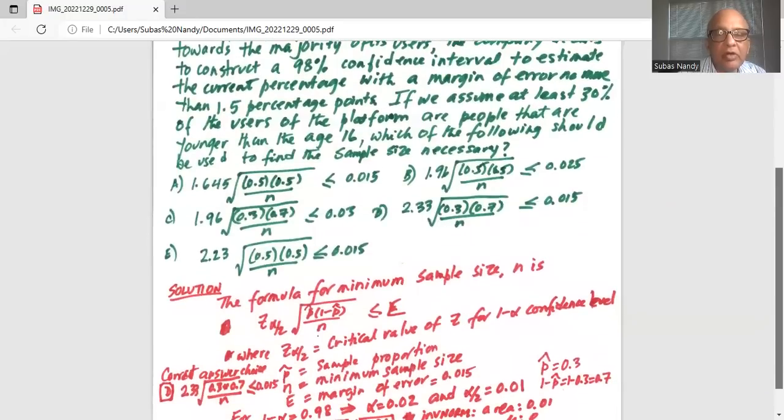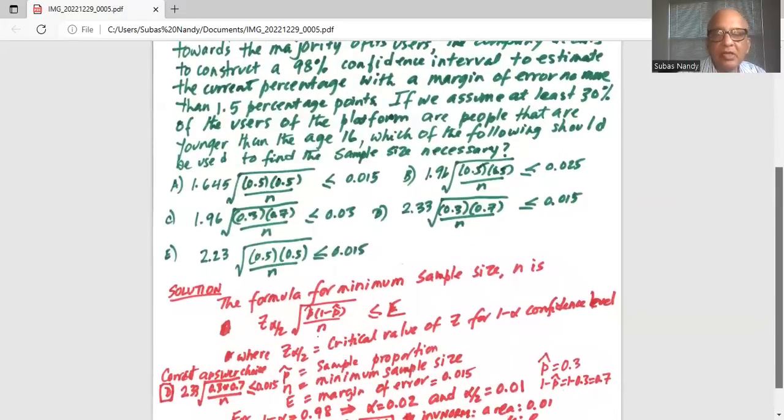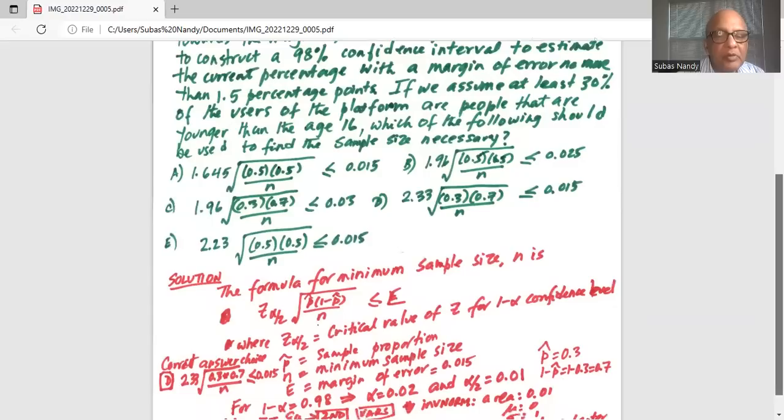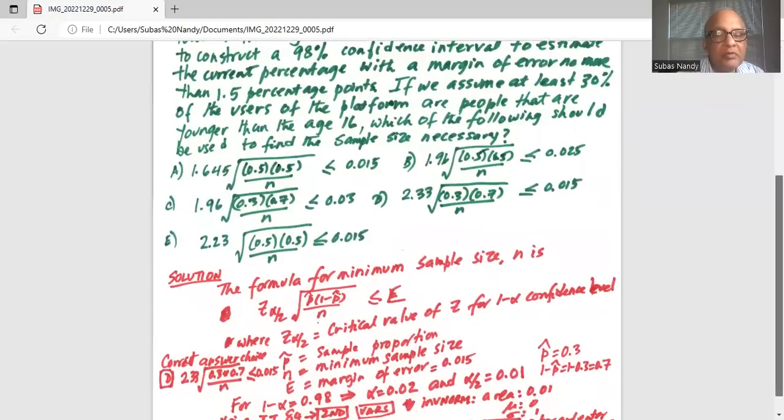The formula for minimum sample size: n is z alpha by 2 multiplied by square root of p hat times 1 minus p hat divided by n. z alpha by 2 is the critical value of z for the 1 minus alpha confidence level. p hat is the sample proportion. n is the minimum sample size. e is the margin of error.